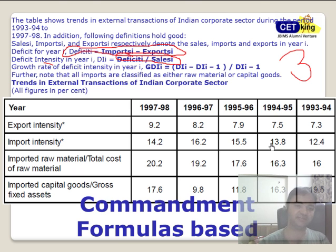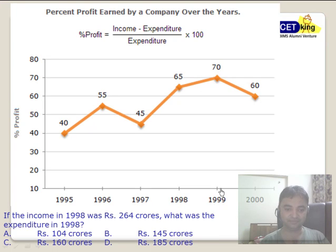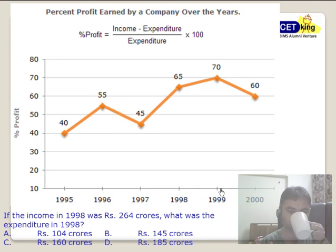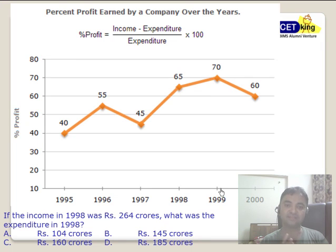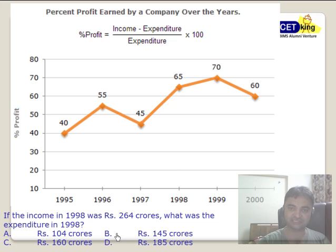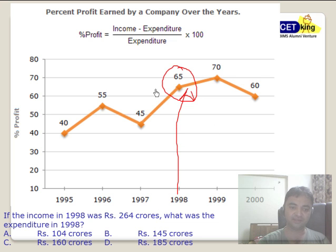Now I want you to pause the video and try this question. There were three questions in CAT and one question in CMAT based on this chart. If the income in 1998 was 264 crore, what is the expenditure in 1998? The chart is giving you the percentage profit in 1998 — my value is 65 percent.